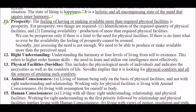Next term is 'Prosperity.' The feeling of having or making available more than required physical facilities is prosperity. For prosperity, two things are required: first, identification of the required quantity of physical facilities; and second, ensuring availability or production of more than required physical facilities. We can be prosperous only if there is a limit to the need for physical facilities. If there is no limit, the feeling of prosperity cannot be assured. Just assessing the need is not enough — we need to produce or make available more than the perceived need.